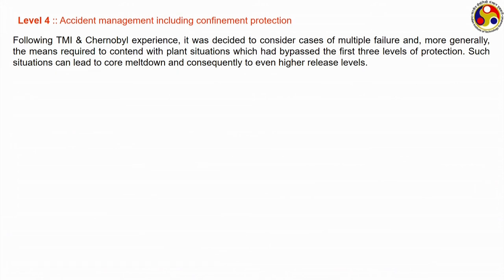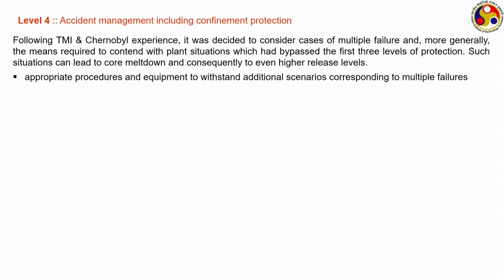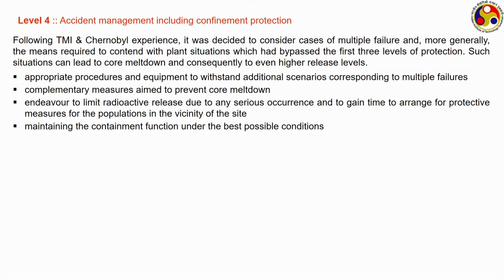The fourth level involves accident management including confinement protection — the final barrier preventing release of radioactivity to the surroundings. Following TMI and Chernobyl, it was decided to consider cases of multiple failures that bypass the first three levels of protection. Such situations can lead to core meltdown and even higher release rates. Appropriate procedures and equipment must withstand additional scenarios corresponding to multiple failures, with complementary measures aimed to prevent core meltdown, limit radioactive release, and gain time for protective measures for populations near the site.